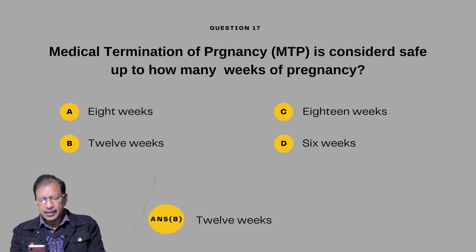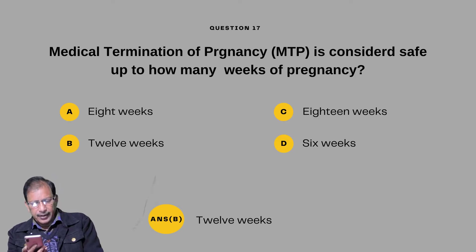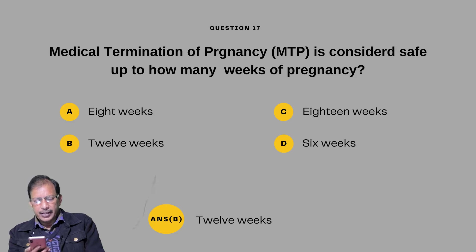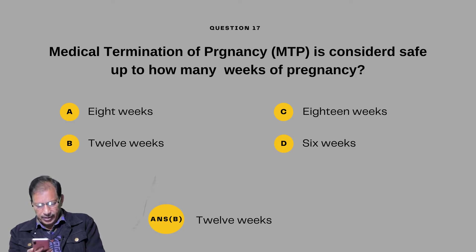Question number sixteen: Medical termination of pregnancy, MTP, is considered safe up to how many weeks of pregnancy? Options are 8 weeks, 12 weeks, 18 weeks, and 6 weeks. Medical termination of pregnancy is considered safe up to 12 weeks.